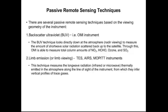To measure air pollutants we primarily rely on passive remote sensing — instruments in space passively detect electromagnetic radiation coming from the Earth. An instrument like the Ozone Monitoring Instrument uses UV and visible wavelengths of backscattered light to measure nitrogen dioxide, formaldehyde, ozone, and sulfur dioxide. Others use limb emission or limb viewing with infrared or microwave wavelengths. Instruments such as TESS, AIRS, and MLS give us information on gases like methane, carbon monoxide, and carbon dioxide.